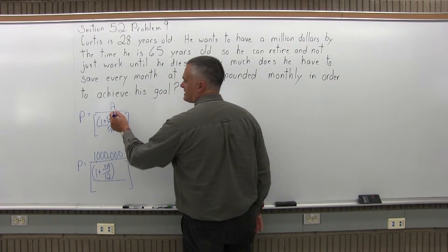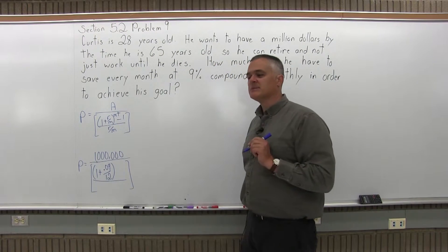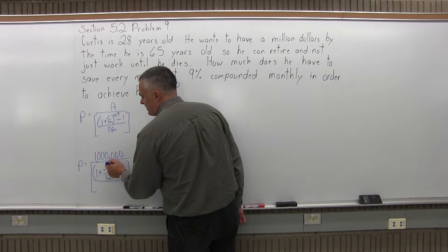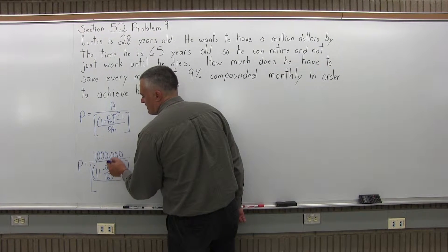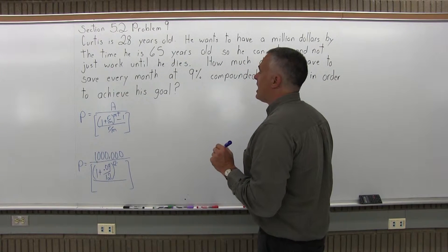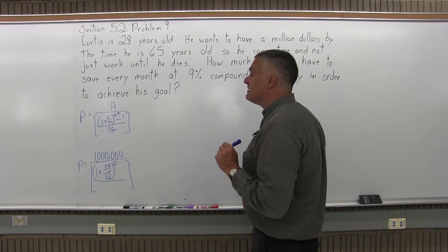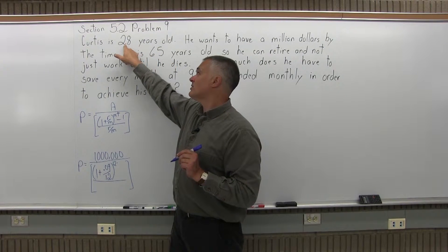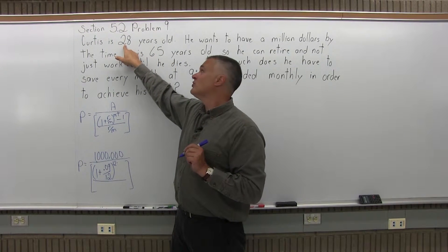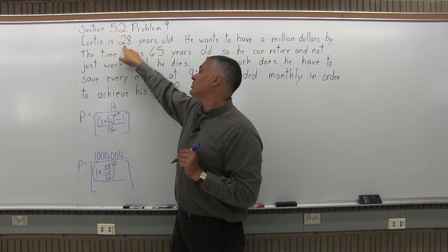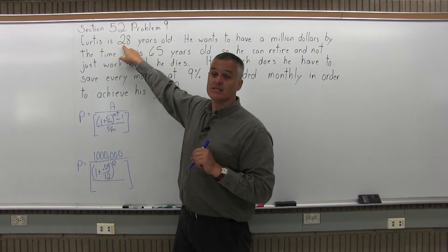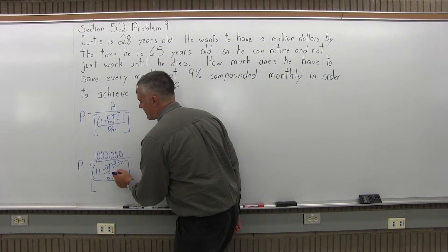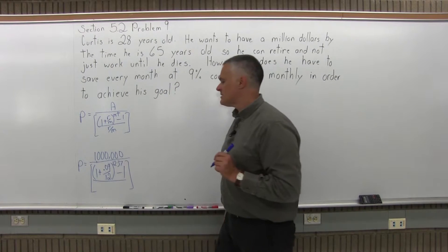That's in parentheses. I close the parentheses. The parentheses have an exponent of m times t. The m again, number of times compounded per year is 12 for monthly compounding. And now the t, number of years, again t is not 65. That's when we're going to stop the savings. But we don't start at birth or at age 0. We're starting at age 28. So 28 plus 37 is 65. The value of t is 37, which is a pretty long time.